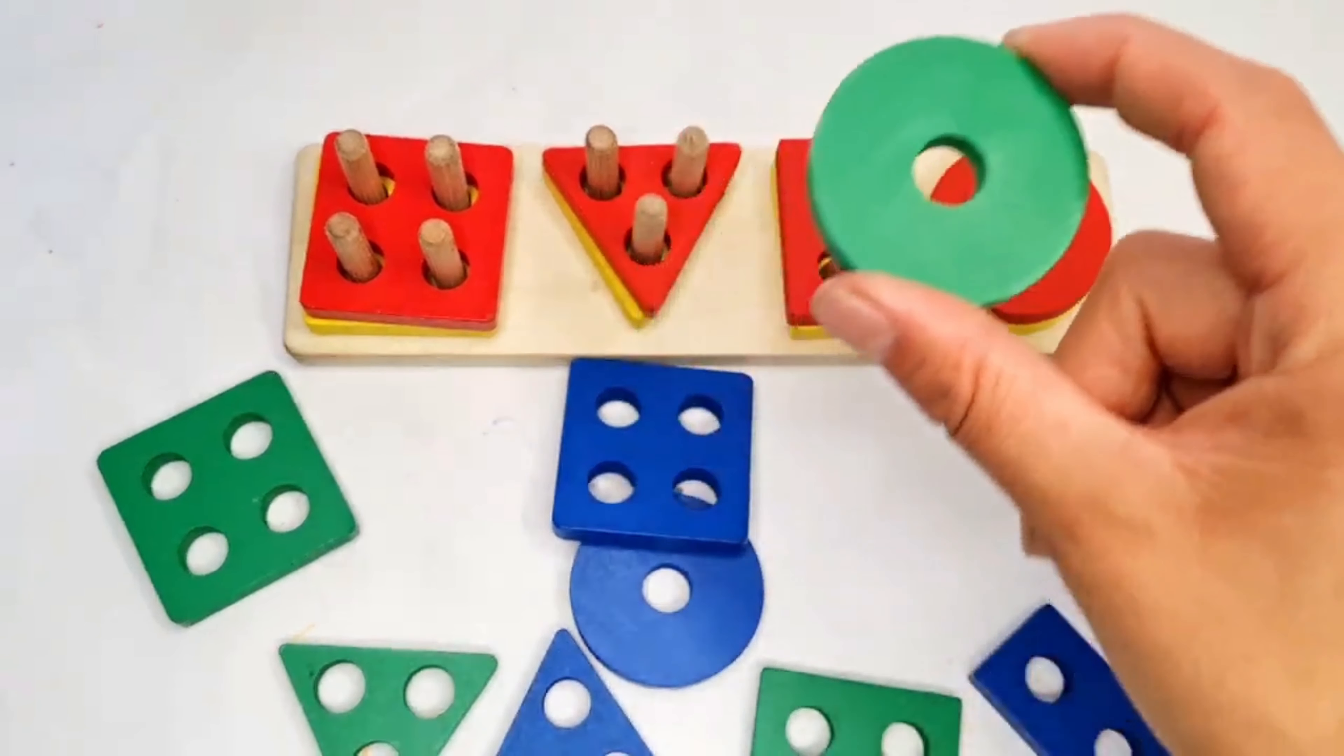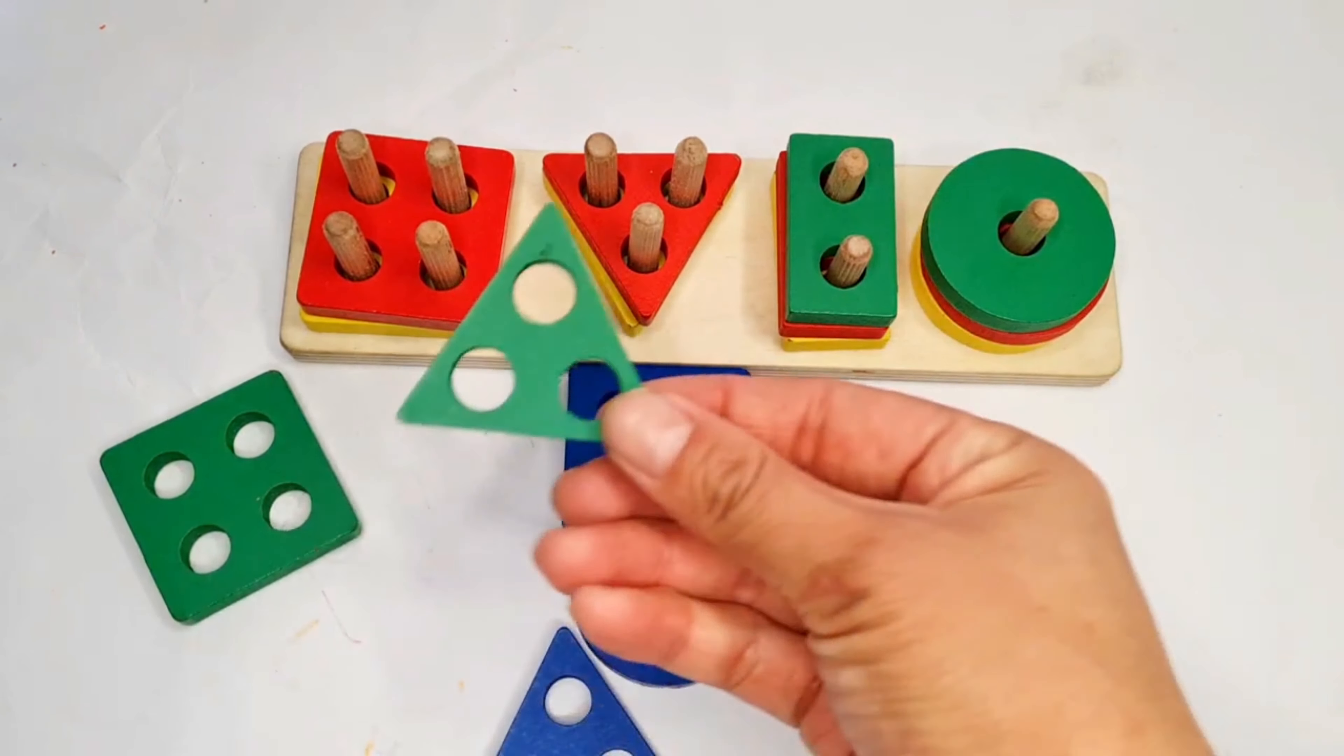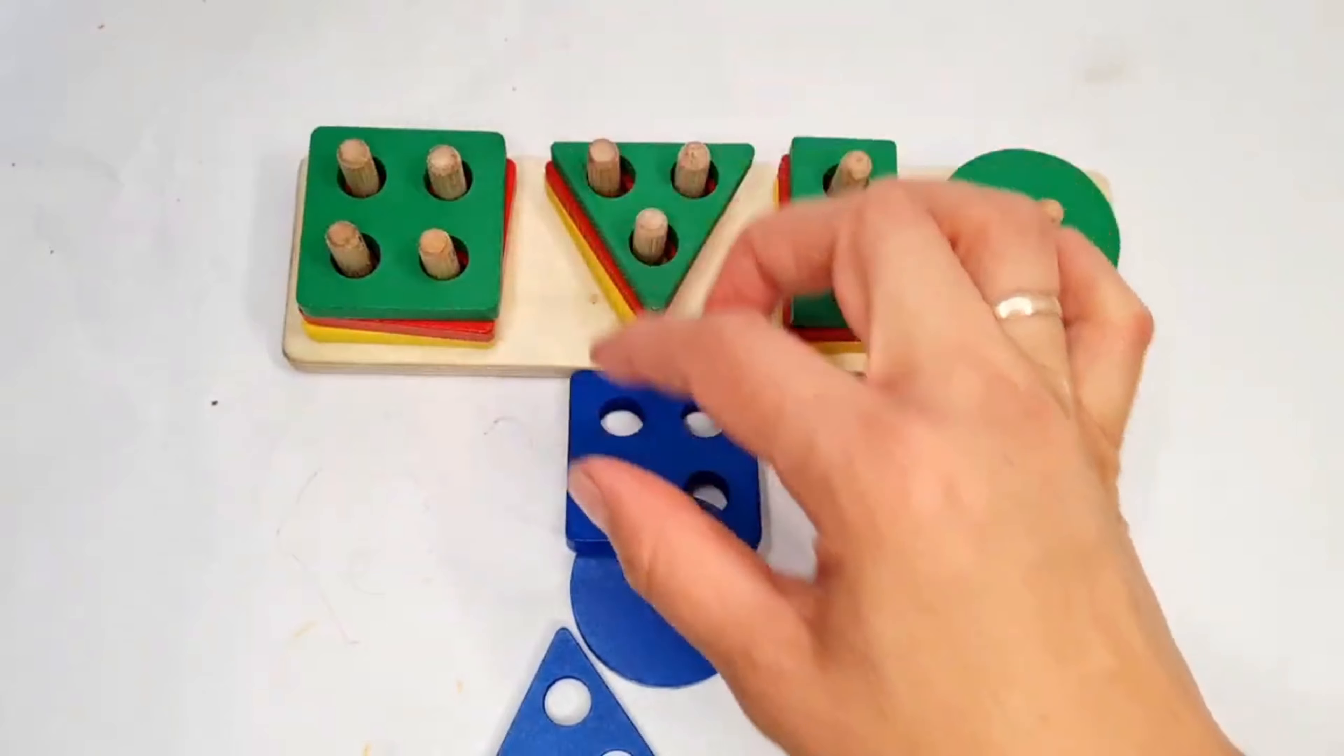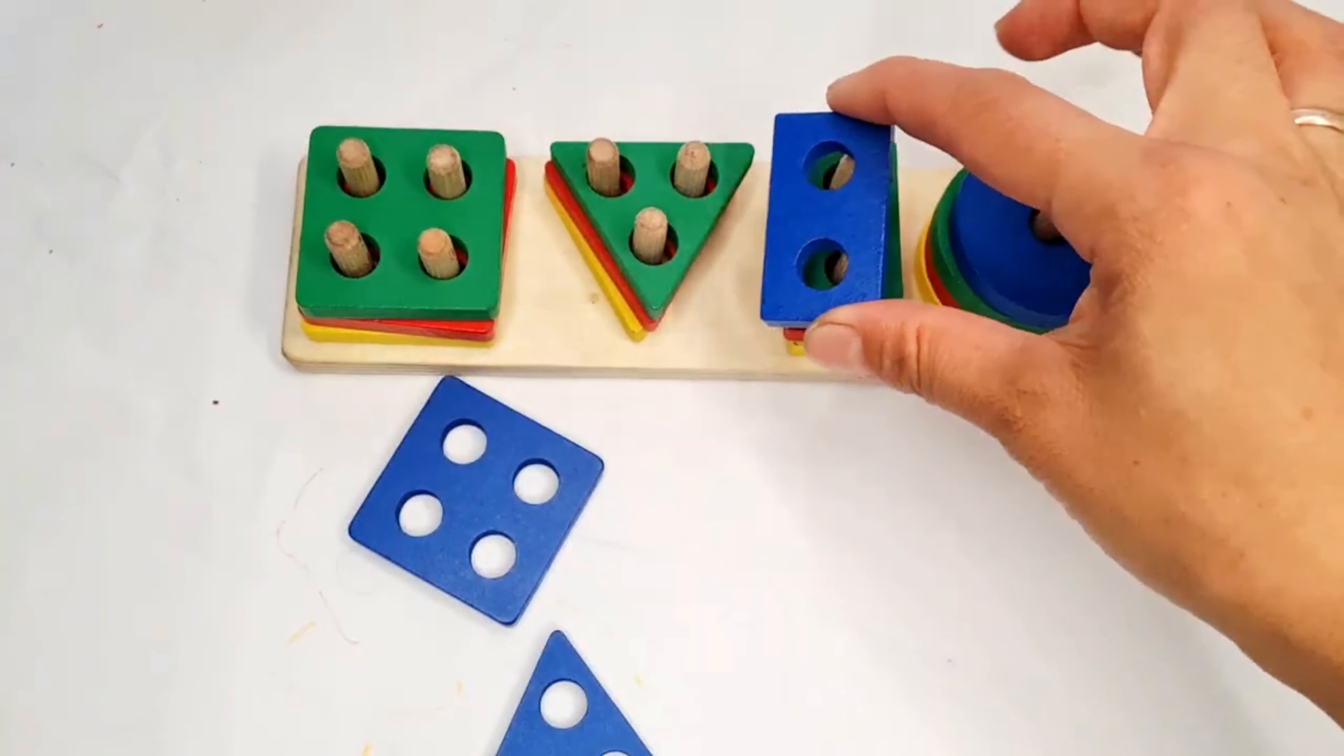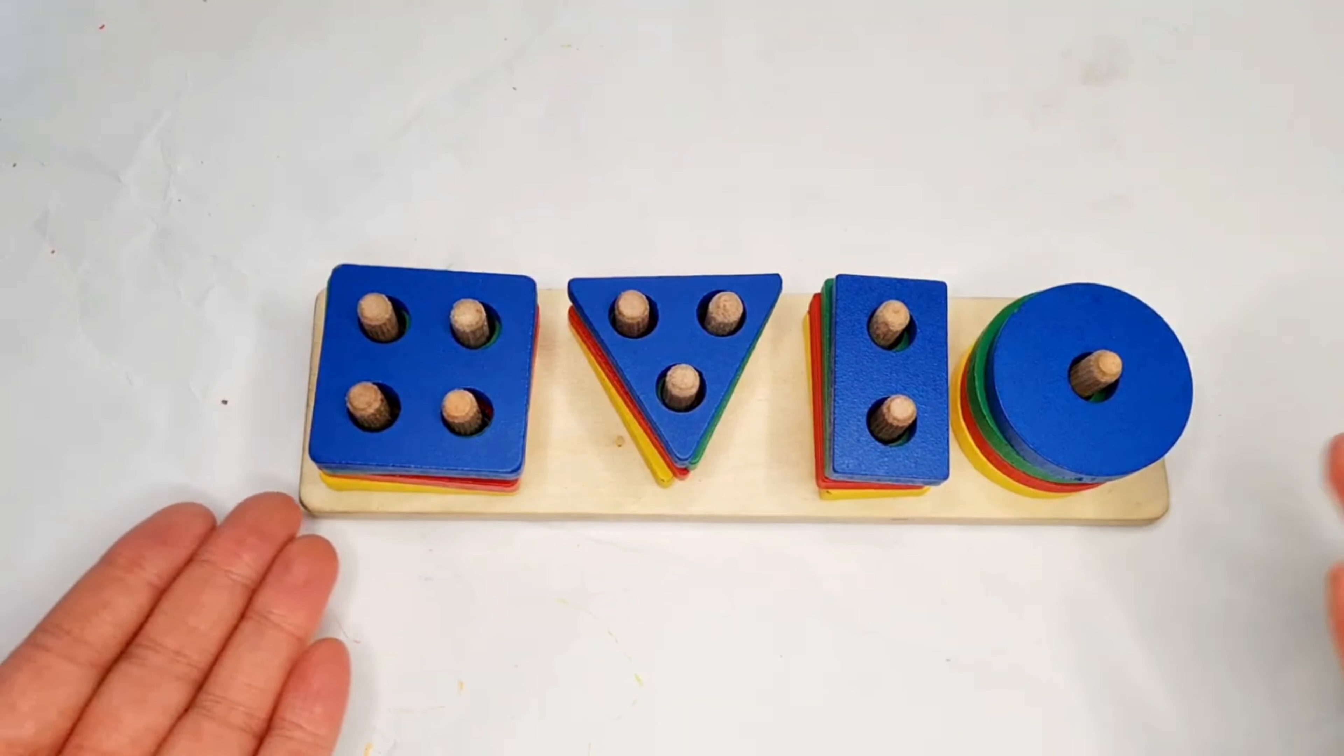Green circle. Blue circle, blue rectangle, blue triangle, and last blue square. Yes, we did it.